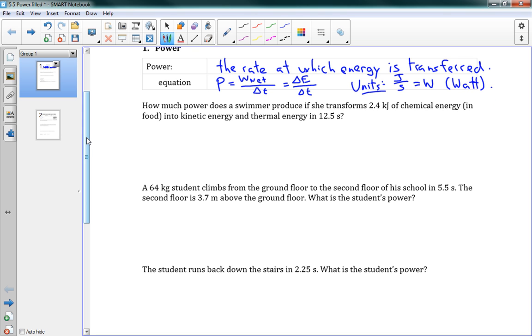Let's try one of these problems. It says how much power does a swimmer produce if she transforms 2.4 kilojoules of chemical energy in food into kinetic energy and thermal energy in 12.5 seconds. Delta E is equal to 2.4 kilojoules. Delta T is 12.5 seconds. P is equal to delta E over delta T. We need to convert kilojoules into joules, so that's 2,400 joules over 12.5 seconds, which gives us 190 watts.